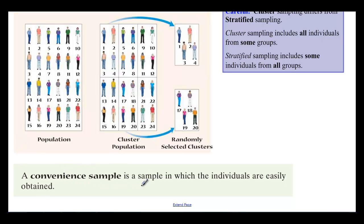And then there's a convenience sample — a sample in which the individuals are easily obtained. This is actually fairly useless. For instance, if we were concerned about whether people thought education was important and we stood in front of Gwinnett Tech or any college and surveyed people walking in, that would be convenient but likely biased — people entering a college will probably see value in education. So be concerned with information gathered through convenience sampling.